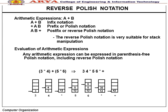For example: (3 × 4) + (5 × 6) in RPN is: 3 4 × 5 6 × +. Evaluation: push 3, push 4, multiply → 12; push 5, push 6, multiply → 30; then 12 + 30 = 42.